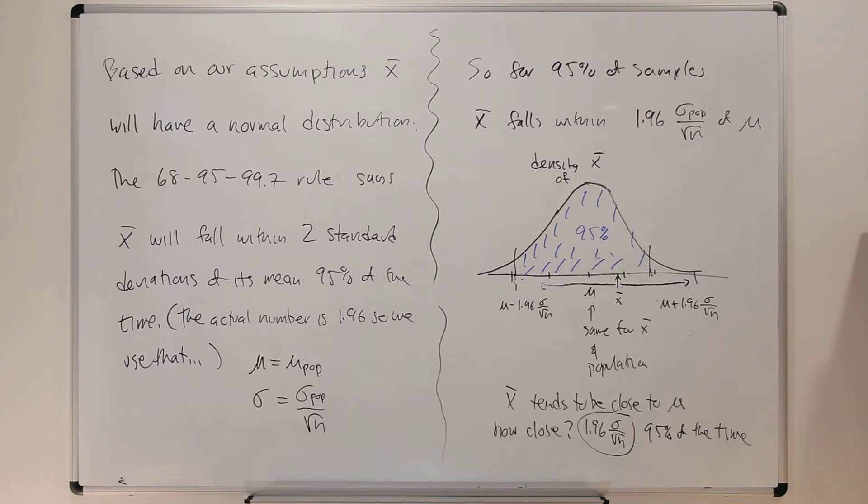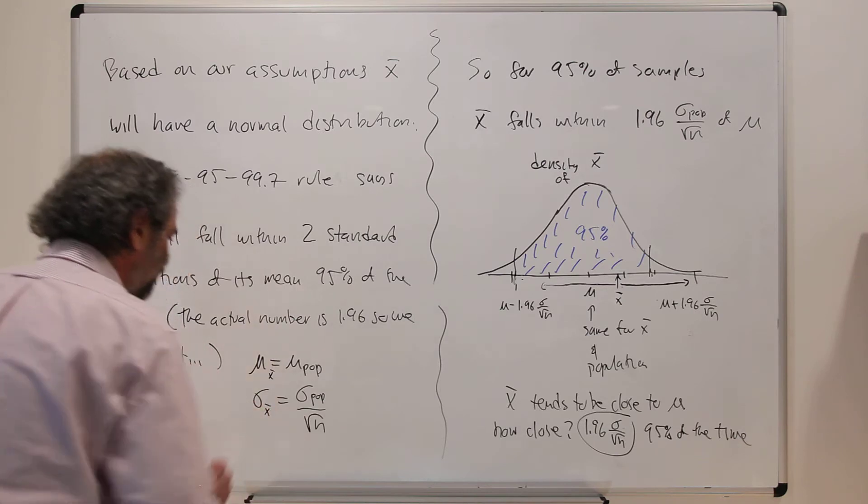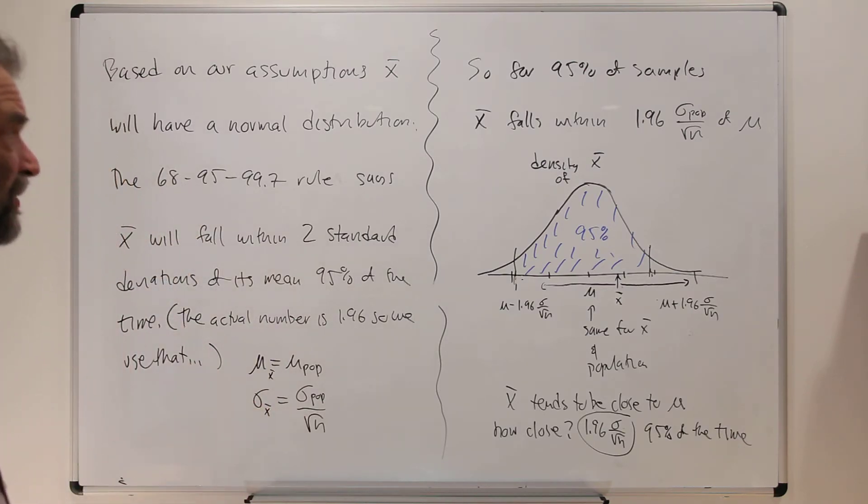The sample mean will be within 1.96 standard deviations of the true mean 95% of the time. But we know the mean for x-bar is the population mean, and we know sigma for x-bar is the population standard deviation divided by root n.